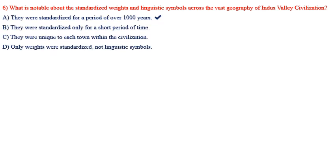What is notable about the standardized weights and linguistic symbols across the vast geography of Indus Valley civilization? Options: A) They were standardized for a period of over 1000 years, B) They were standardized only for a short period of time, C) They were unique to each town, D) Only weights were standardized, not linguistic symbols. The answer is A — they were standardized for a period of over 1000 years.